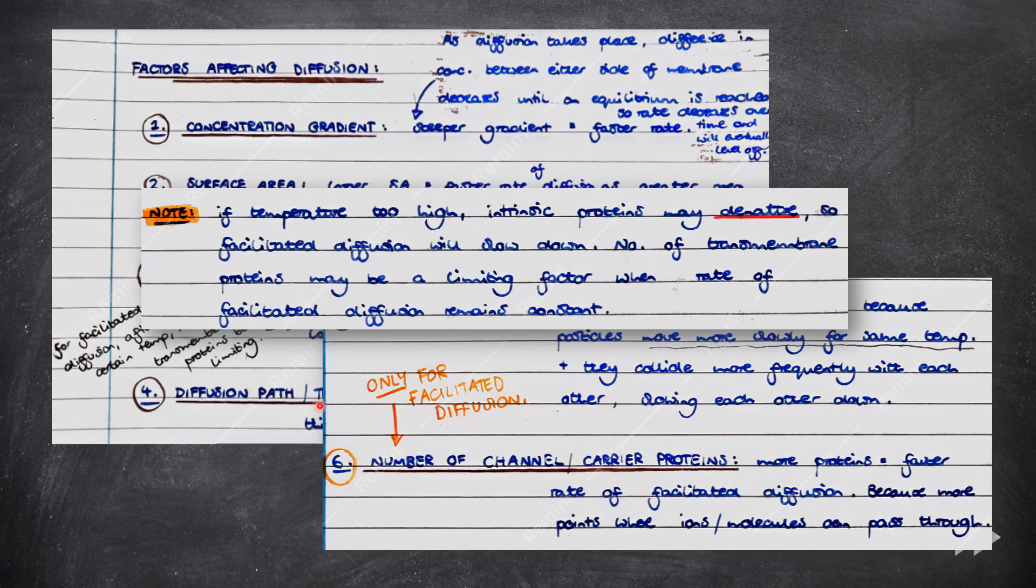Note that, however, if the temperature is too high, intrinsic proteins, such as carrier and channel proteins, may denature, so facilitated diffusion will slow down. The number of transmembrane proteins may be a limiting factor when the rate of facilitated diffusion remains constant.